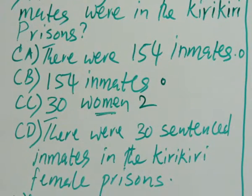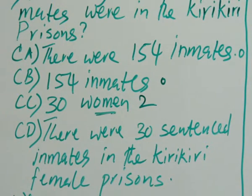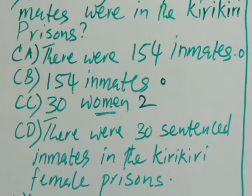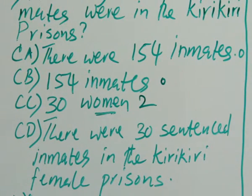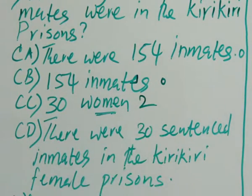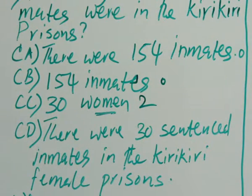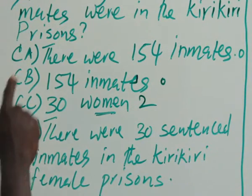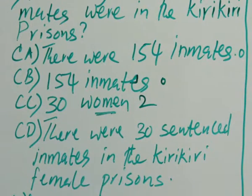So Candidate A didn't get the answer. That goes with Candidate B who also answers 154 inmates. That is also wrong, obviously. And in addition, we also find out that this answer is in a phrase. Answers are better when they are in sentences, as Candidate A wrote it, even though it's wrong.